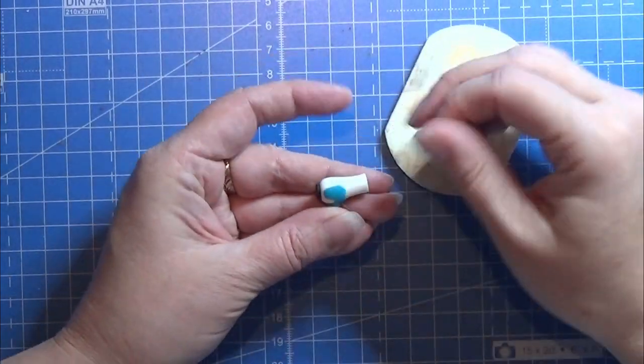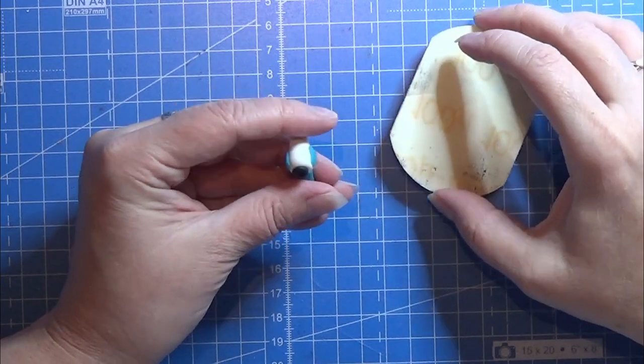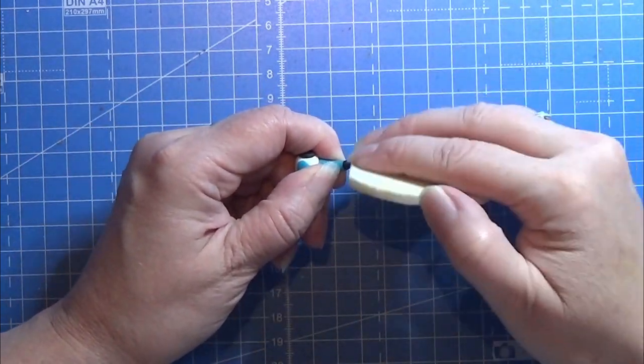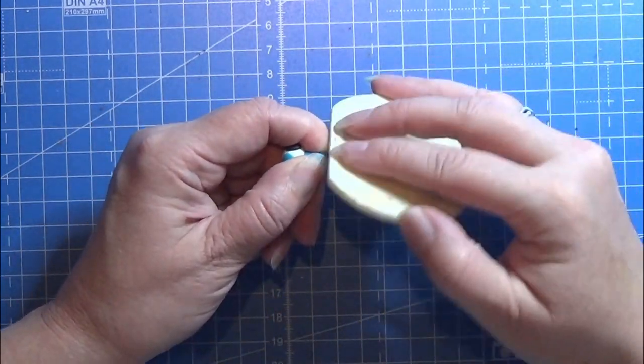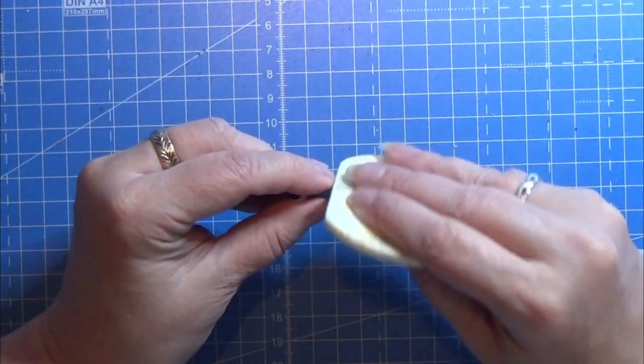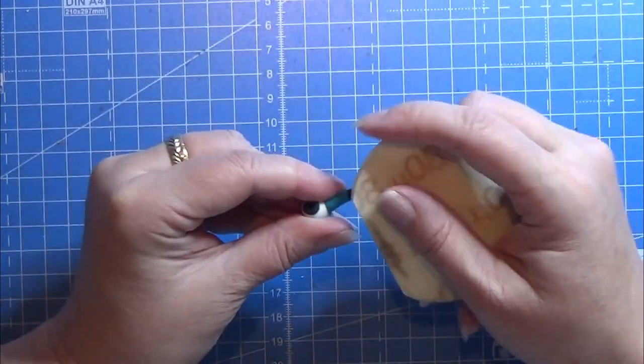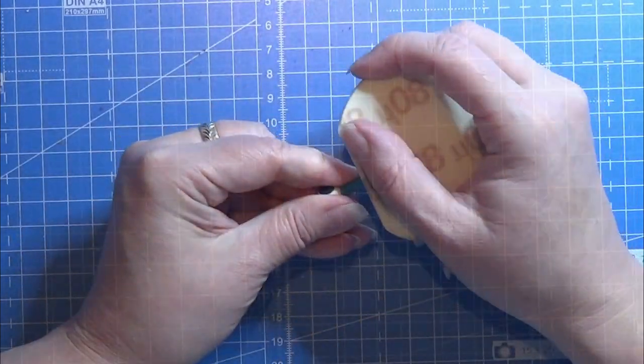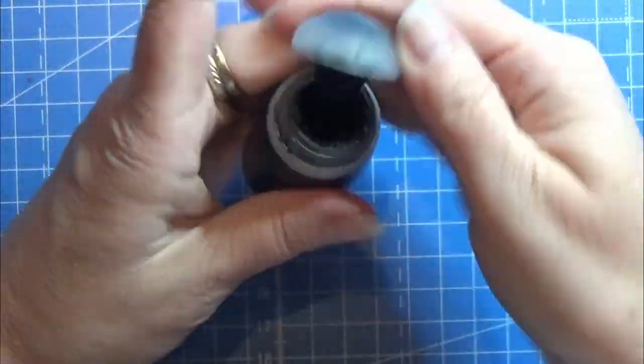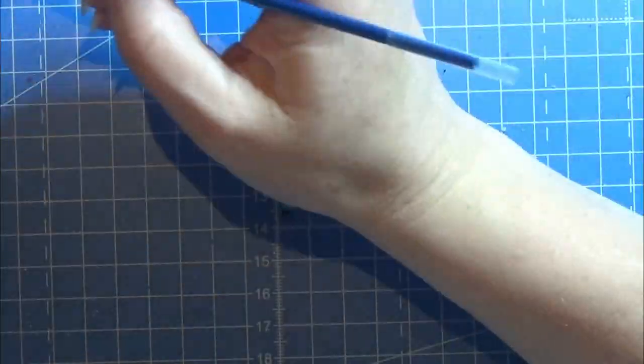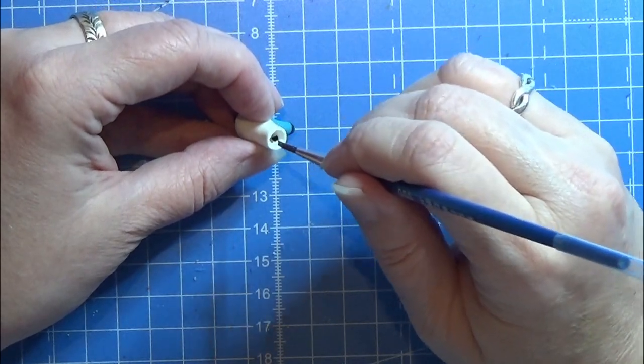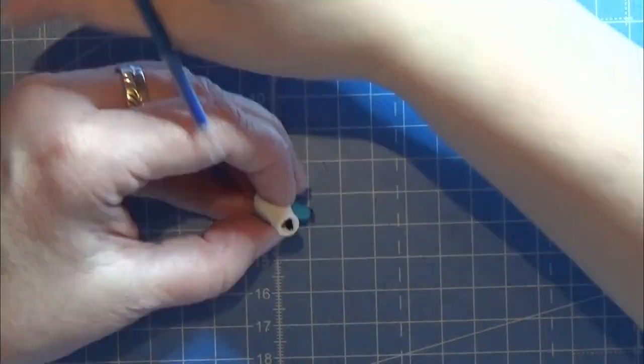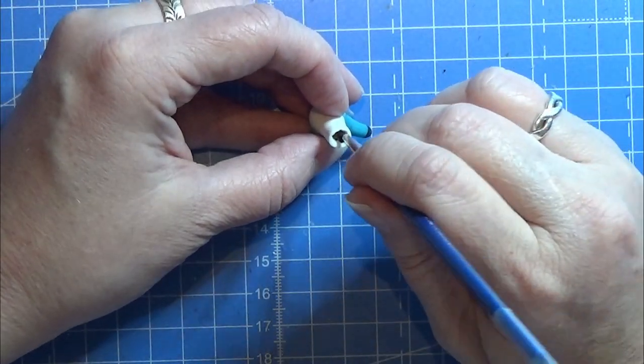After baking and cooling down, I'm going to sand it a tiny bit—not too much, but just making the shape pretty good as I wanted to. I am painting the inside of the hairdryer with black paint. I'm using Citadel paint here.